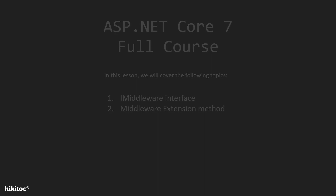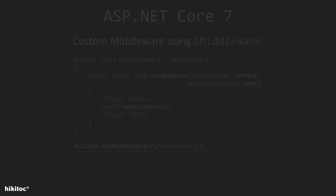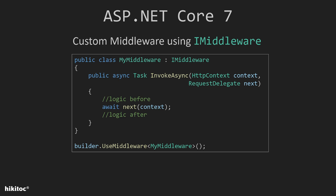In the previous lesson, as you may recall, we discussed different approaches for declaring middleware. One of these approaches involves creating a separate class when the middleware logic and code become substantial, allowing for better organization and separation. There are several common ways to utilize a class as custom middleware.